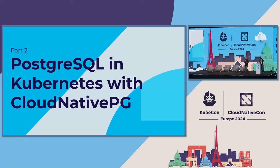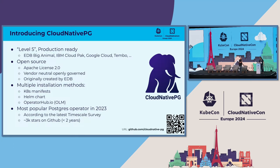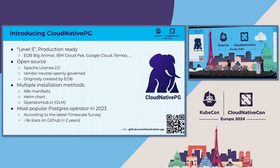Now let's talk a little bit about how many people here are familiar with CloudNativePG. This is a good audience! Just for those who may not be familiar: CloudNativePG is a level five, production-ready Kubernetes operator, which is fantastic. It's already in use in a number of places — obviously from EDB's BigAnimal, at IBM's CloudPak, we have it in Google Marketplace, Tembo. It's fully open source, vendor neutral, created by EDB. 3,000 stars on GitHub already. You can check out the link at the bottom.